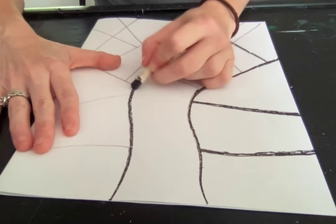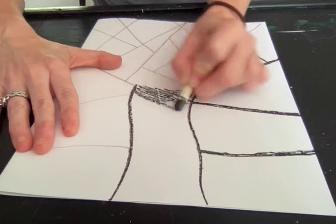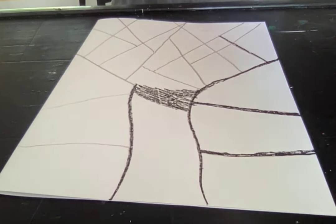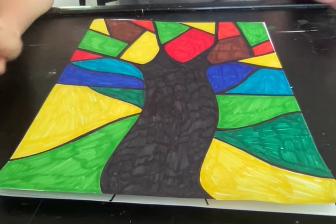You're gonna color in your tree trunk with the black marker. That's the only thing you're gonna color in. You're gonna trace everything black and you're gonna color it in with sharpie. Next week you're gonna color it real dark with crayon.